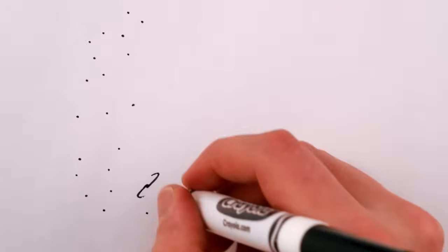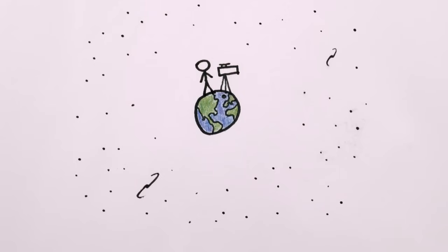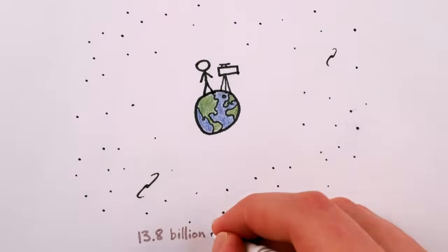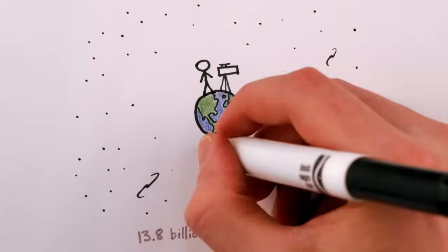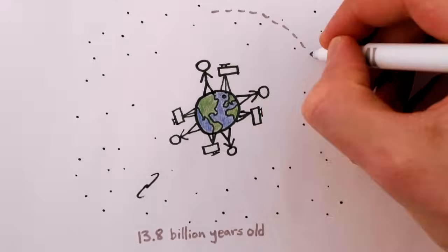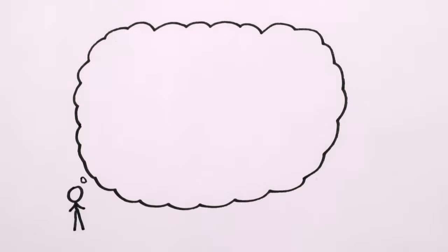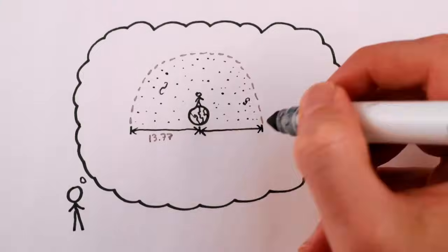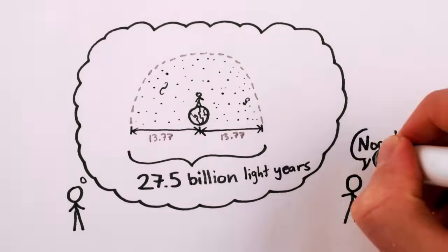More specifically, the observable universe is the region of space visible to us from Earth. And since the universe is only about 13.8 billion years old and light takes time to travel through space, then regardless of what direction we look, we see light that's been traveling at most 13.8 billion years. So it's logical to think that the observable universe must then be 2 times 13.77 equals 27.5 billion light years across. But it's not.